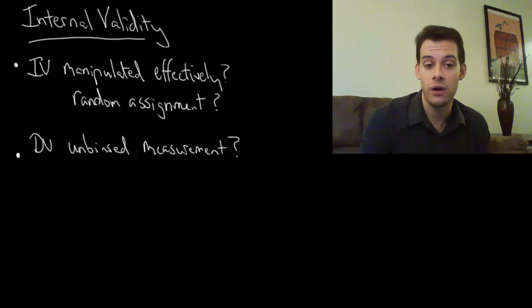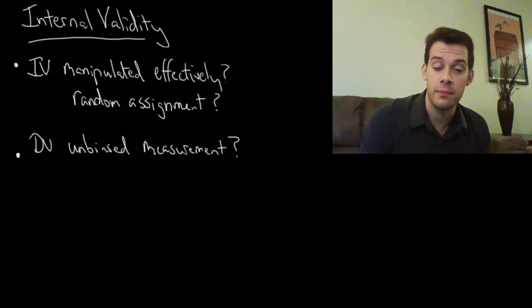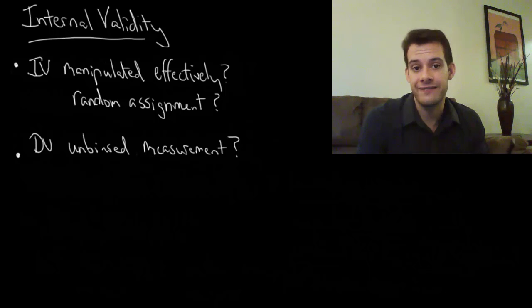And this bias could come in the form of demand characteristics that have caused participants to respond in a particular way, or it could be bias coming from the observer. For instance, if a doctor knew that a participant was receiving the medication or was receiving a placebo, then this might influence his interpretation of the symptoms and therefore it would influence the results and it would be a biased measurement. So we want to avoid any potential for bias in how we're measuring our dependent variable.